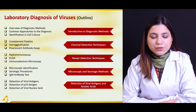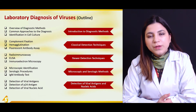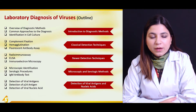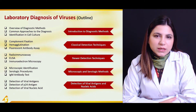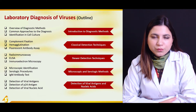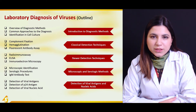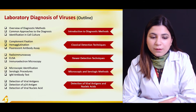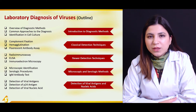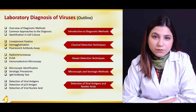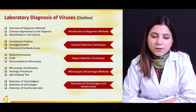Then we'll move on to immunoelectron microscopy and other microscopic identifications, in which we'll see the basic microscope, the electron microscope, etc. We'll see how we can directly detect the presence of viruses in cells by just visualizing the cytopathic effect that the virus might have caused in a cell.